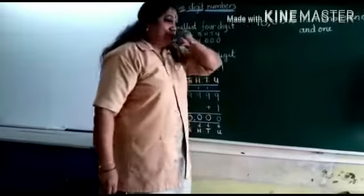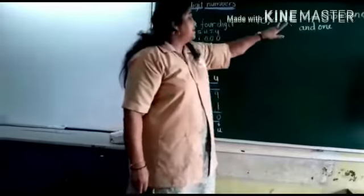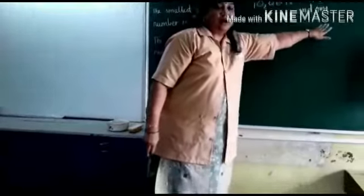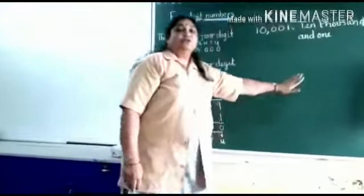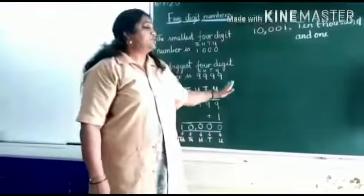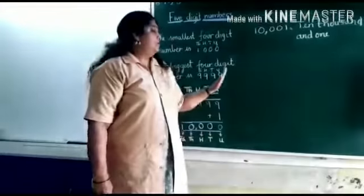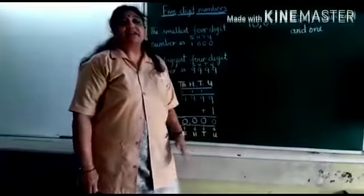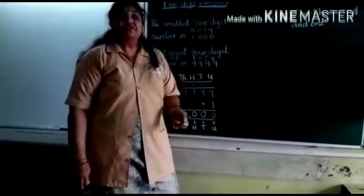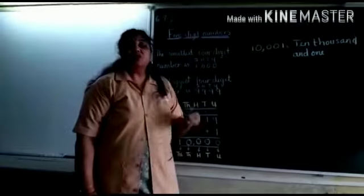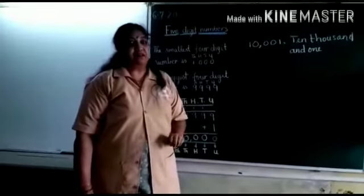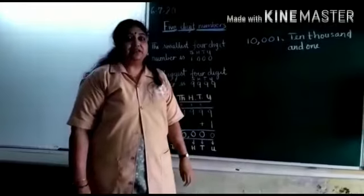So when I am reading this number I will read it as ten thousand and one. Children, now you saw what is a five digit number. In the next session we will see how to read and write five digit numbers. Thank you.